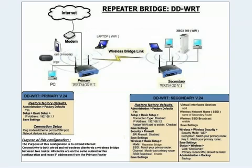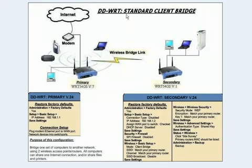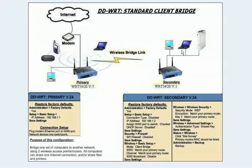The first router has a laptop, T-Mobile cell phone, and a PSP connected wirelessly, and a personal computer connected via wire. We're going to first set up a standard client bridge, which means the second router only has connections via a wired connection — no wireless connections at all. We're doing this because if we do the repeater bridge first, you usually won't be successful. So we'll set up the standard client bridge first, then change it to a repeater bridge.